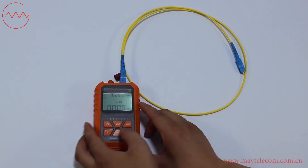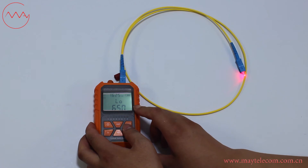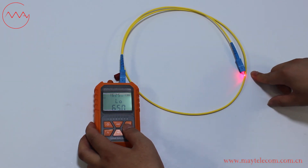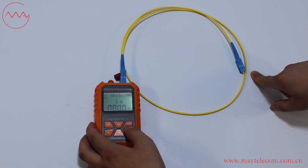Press the LED button to turn off the function, then press the LED button to turn on the visual fault locator. On the display it shows the wavelength of 650 nm. It is a continuous wave. Press the LED button to change it into flash light. Press the LED button to turn off the visual fault locator.